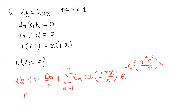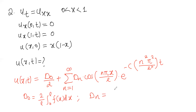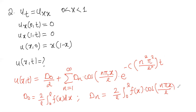Now we look to find d0 and dn. d0 is given by 2 over l times the integral from 0 to l of f(x) dx, while dn is given by 2 over l times the integral from 0 to l of f(x) cos(nπx/l) dx. Let's find the solution.